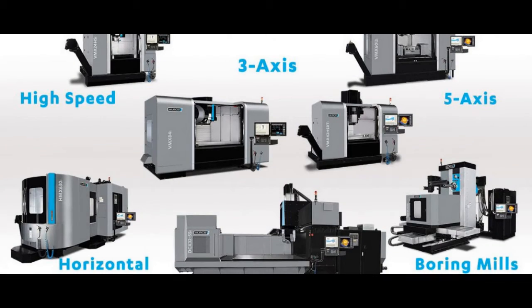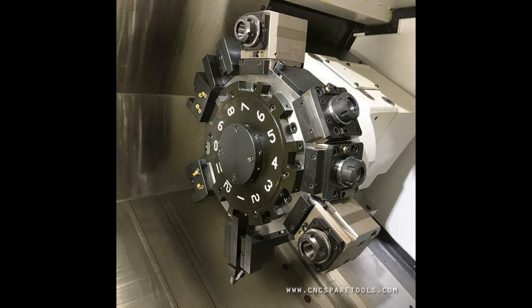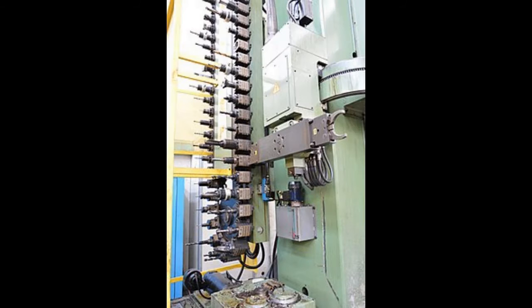There are different types of CNC machines, but there is one common thing among them, and that is the tool changing process. While performing different operations on a job, you will need to change the tool on the spindle. And changing this tool manually is slow and inefficient. That's where the Automatic Tool Changer comes in.